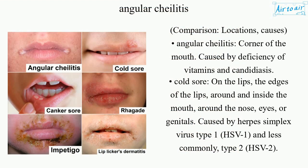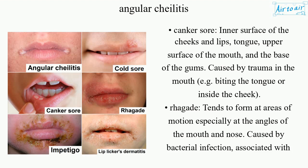Comparison — Locations and Causes. Angular Cheilitis: corner of the mouth, caused by deficiency of vitamins and candidiasis. Cold sore: on the lips, edges of the lips, around and inside the mouth, around the nose, eyes, or genitals, caused by herpes simplex virus type 1 (HSV-1) and less commonly type 2 (HSV-2). Canker sore: inner surface of the cheeks and lips, tongue, upper surface of the mouth, and the base of the gums, caused by trauma in the mouth, e.g. biting the tongue or inside the cheek.